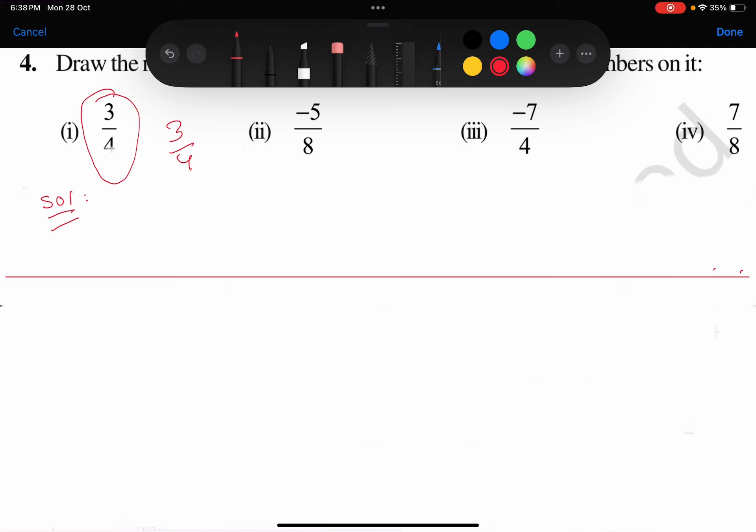The denominator is 4, so I'll show you: 0, 1/4, 2/4, 3/4, and here it will become 1, because when you reach 4 in the denominator, it becomes 1. Now you need to get 3/4.